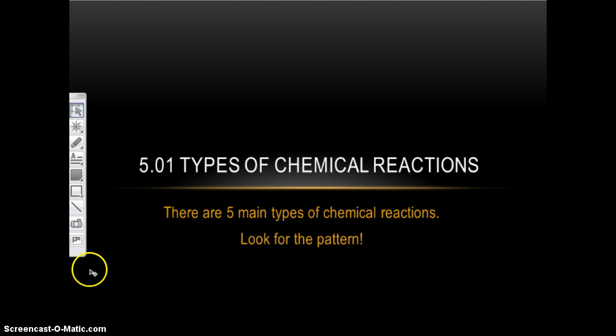Hey everybody, Mrs. KJ here, going over 5.01 types of chemical reactions. There are five main types of chemical reactions that you need to tell which one is which, and it's all about looking for patterns.